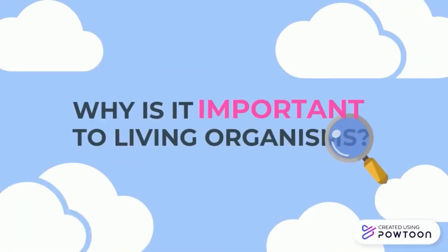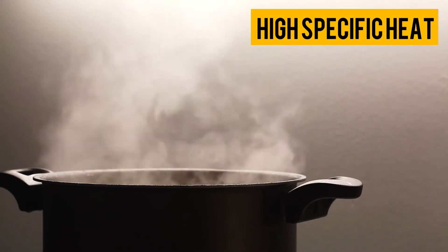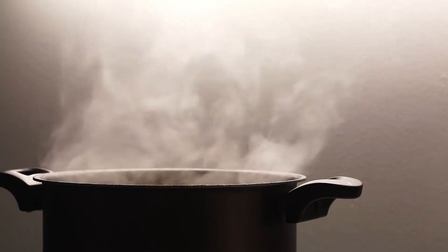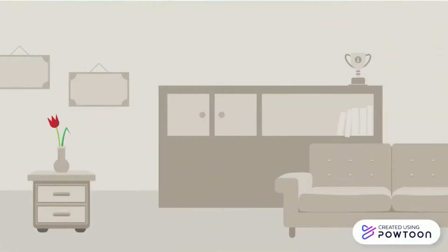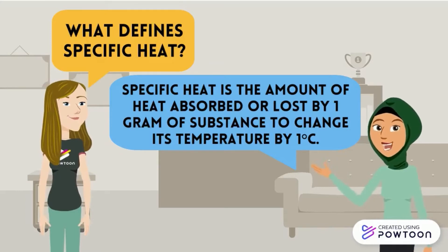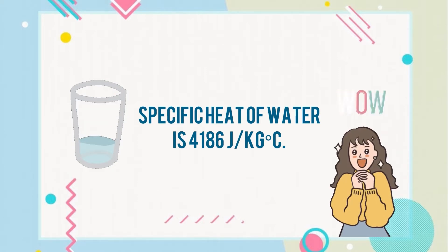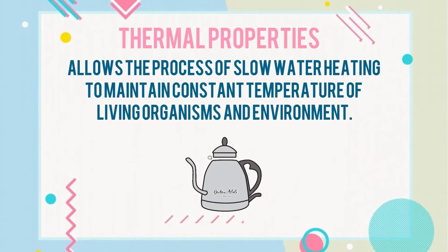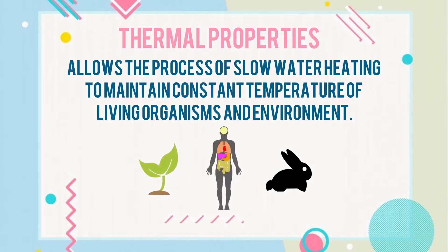So why is this property important to living organisms? Water has high specific heat and high heat of vaporization. These properties require more energy to break hydrogen bonds in water. Specific heat is the amount of heat absorbed or lost by one gram of a substance to change its temperature by one degree Celsius. The specific heat of water is 4186 joules per kilogram per degree Celsius — quite high! This property allows water to heat slowly and maintain a constant temperature in living organisms and the environment.